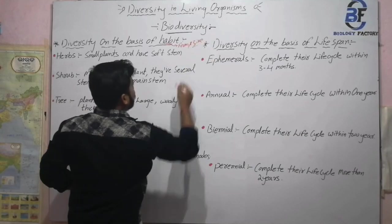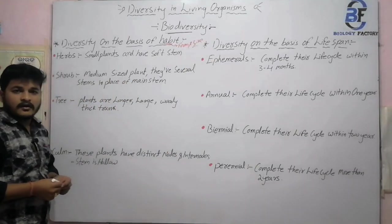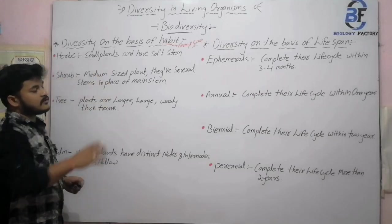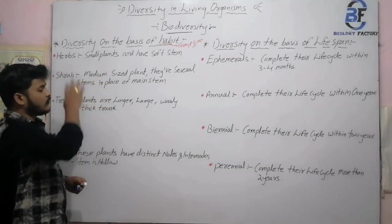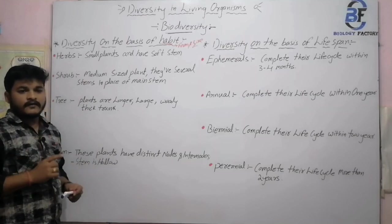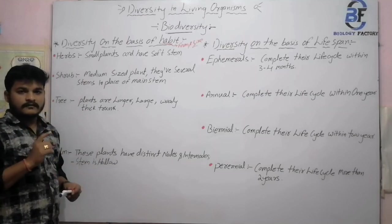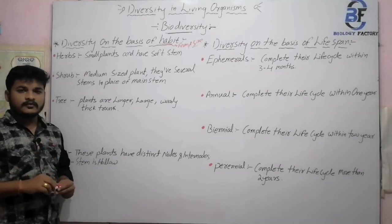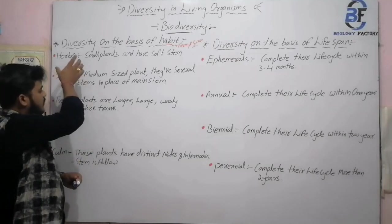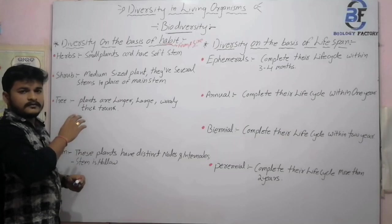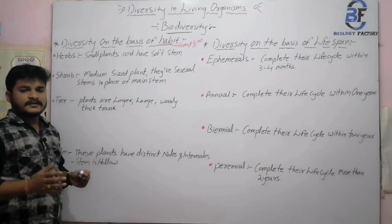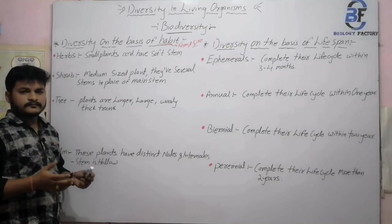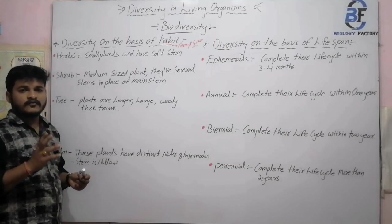According to the form and size of a plant, we basically divide the total plant kingdom into four types. So the first one is herb, next one is shrub, third one is tree, and the fourth one is culm. These are basically divided according to their size and form.